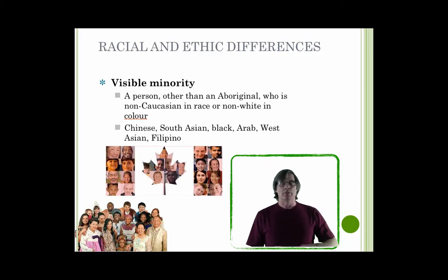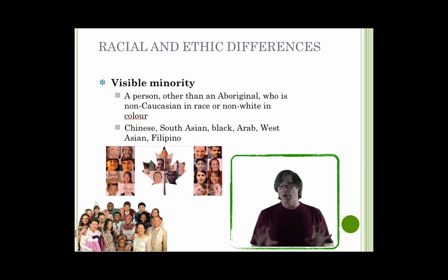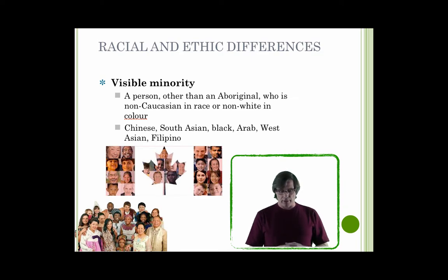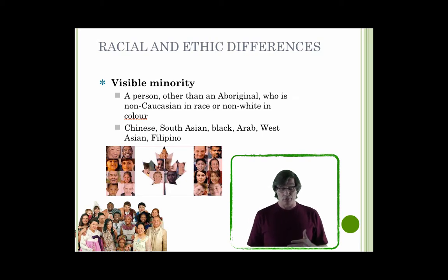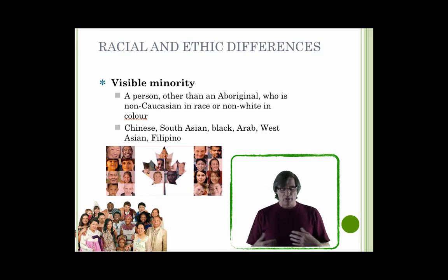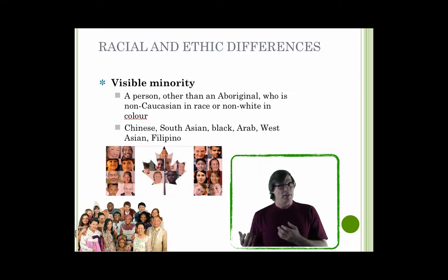Now we're going to move to visible minority. In 1996, that census was the first time people were ever really asked about what visible minority group they were part of — the first time we were gathering that kind of information. Just as we saw in Chapter 1 with definitions of family, different groups have different definitions for visible minorities — legal definitions, social definitions, and individuals may have their own. Minority groups refer to any group that holds less power than the dominant group. The dominant group doesn't necessarily have more numbers — a minority group may have more numbers but less power and less authority over themselves.